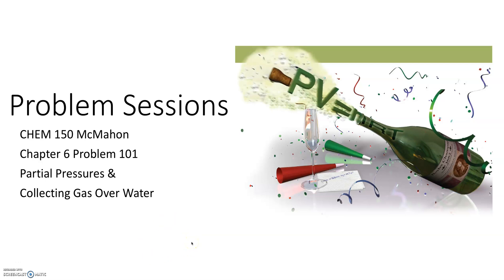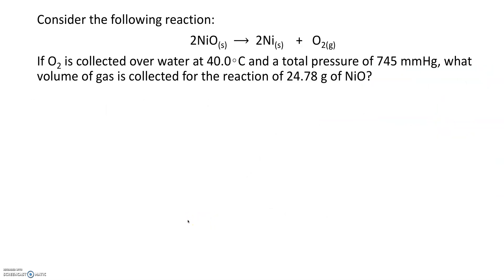Hello students. In this Friday's problem-solving session we are doing chapter 6 problem 101 on the chapter 6 online homework, which is in the gas laws chapter. It's a combination of applying Dalton's law of partial pressure, using stoichiometry, and the ideal gas law constant to determine one of the parameters — whether that be volume or moles — when collecting a gas over water. Let's jump right into the problem.